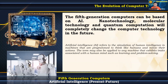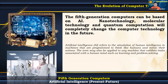The fifth generation computers can be based on AI. Nanotechnology, molecular technology, and quantum computation will completely change computer technology in the future. Artificial intelligence (AI) refers to the simulation of human intelligence in machines programmed to think like humans and mimic their actions. The term may also be applied to any machine that exhibits traits associated with a human mind, such as learning and problem solving.